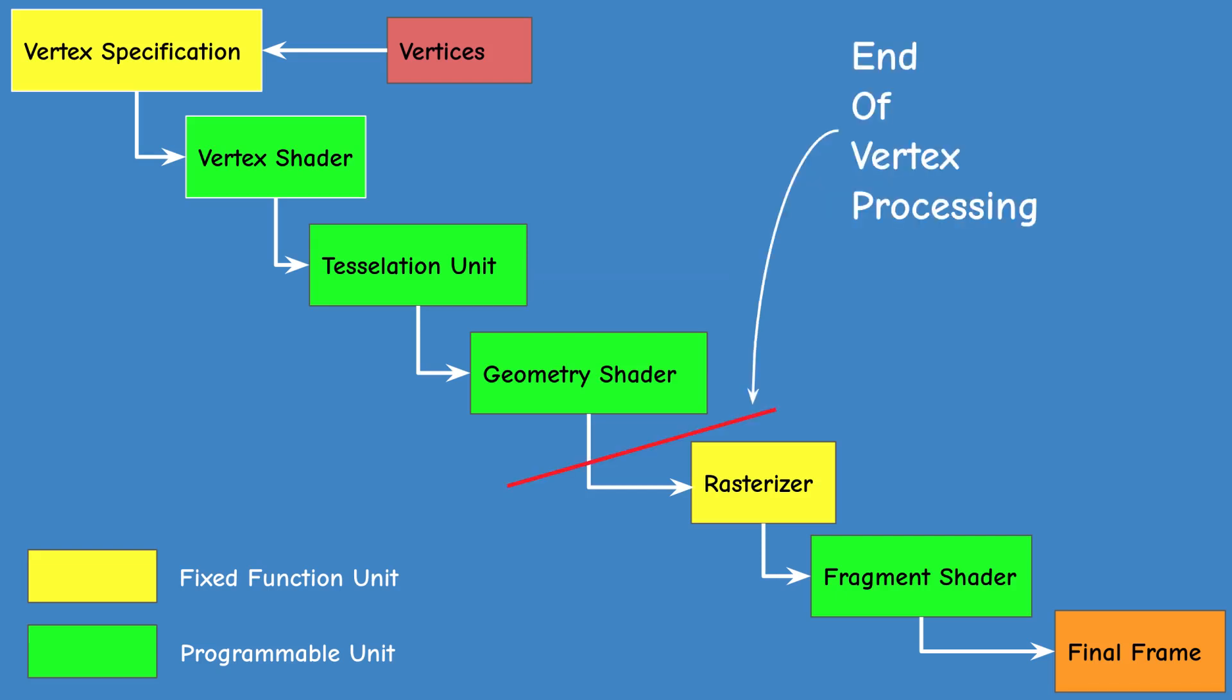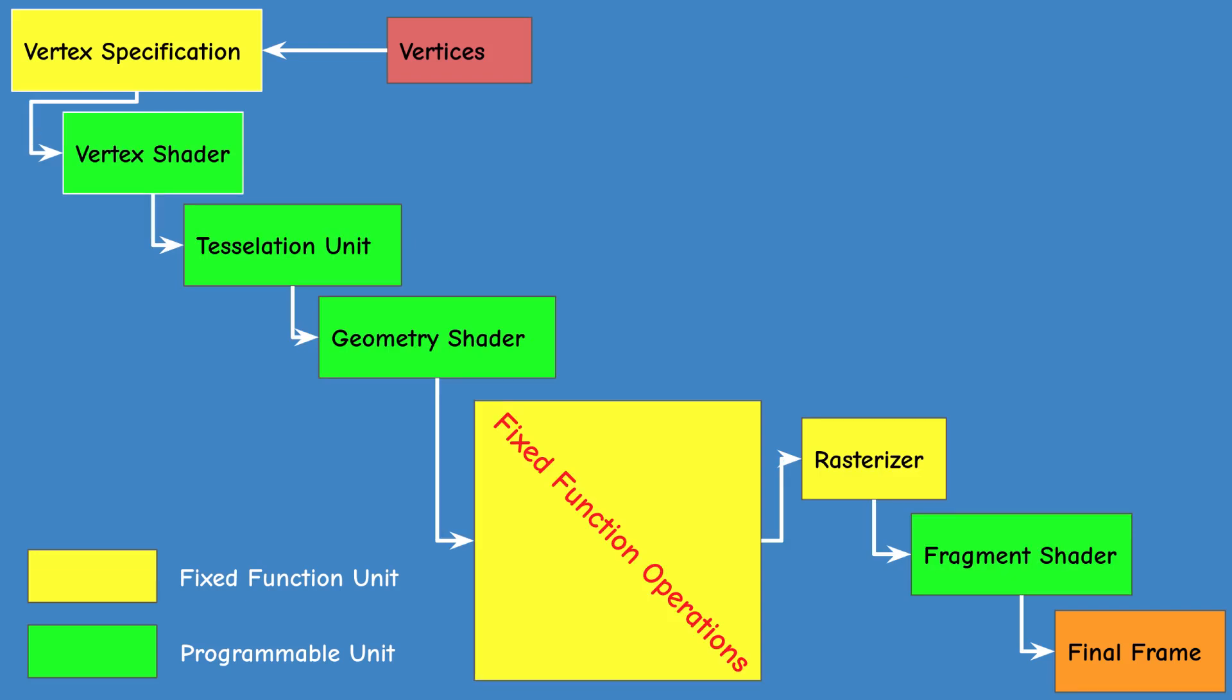At this stage in the pipeline we find several fixed function vertex post-processing stages. They're called fixed function because they are standard hardware logic operations that can be controlled by the application to some degree, but no programming or shader stuff is involved. And the stages are as follows.